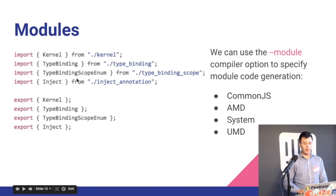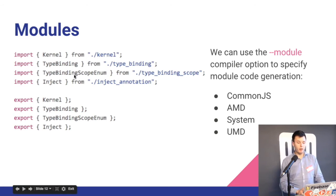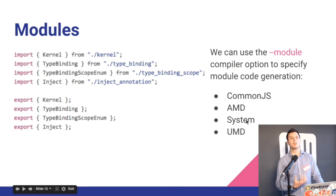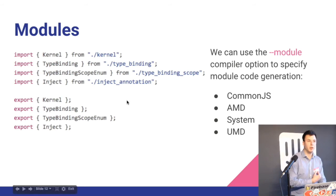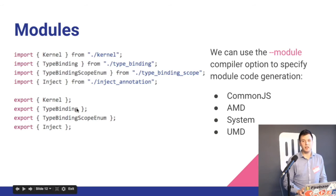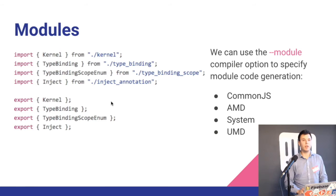Modules: this is the ECMAScript 6 syntax — you can import something from a module, or import more than one thing. A nice thing about TypeScript is that when you compile you can choose which module system to target. You always write the new import syntax, but if you're using require.js you can compile to AMD, and if you're using Node.js you can compile to CommonJS. So you write one codebase that can be transformed into any module system.